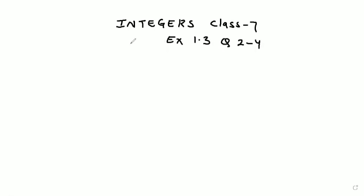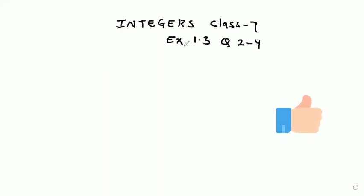If you guys want to see the solutions of earlier exercises, you can go to the playlist where all the solutions are available. Moreover, if you guys want to see the solutions of the same publication house, Goel Brothers, for Class 8 chapters like Rational Numbers, Exponents, Square and Square Roots, Cube and Cube Roots, Algebraic Expressions, Linear Equations, Factorization, Percentage and its Applications, Probability, and Quadrilaterals — you can go to the playlist where all the videos and solutions are available. So let's not waste further time. Let's check out how to solve question numbers 2, 3, and 4 of Exercise 1.3.